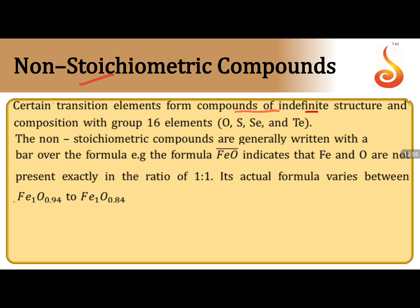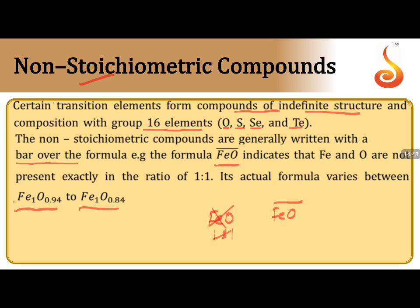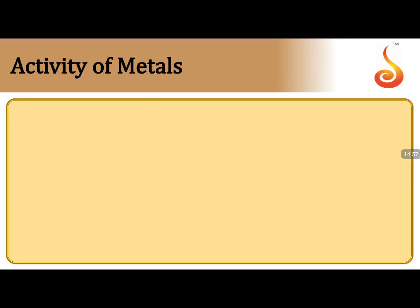Non-stoichiometric compounds: a special property shown by transition elements. Transition elements form compounds of indefinite structure and composition with group 16 elements like oxygen, sulfur, selenium, tellurium. These are called non-stoichiometric compounds. For example, FeO is written with a bar over the formula (FeO̅) to indicate the Fe to O ratio is not 1:1 — it can range like Fe₀.₉₄O or Fe₀.₈₄O. The bar indicates it is a non-stoichiometric compound.